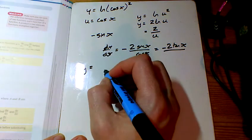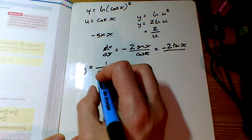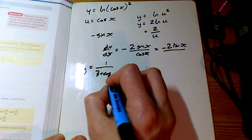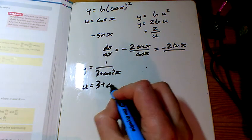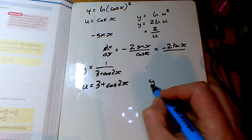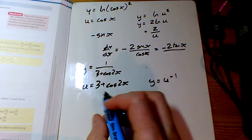For part d, do we need me to do part d? I don't think so. So it's just u equals the bit on the bottom, u equals 3 plus cos 2x, and y equals u to the power of minus 1.